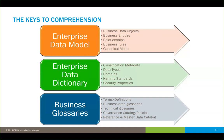The enterprise data dictionary is also extremely important. It includes classification metadata to help classify entities, in addition to data types, domains, naming standards, and security properties. Supplemented by business glossaries, which give us terms and definitions organized by business area. We can also have technical glossaries. It's not limited to just words and definitions — it's a good place to catalog governance policies and link out to reference and master data sources. You have a data catalog tied into your enterprise model pulling everything together in one place in that metadata repository.